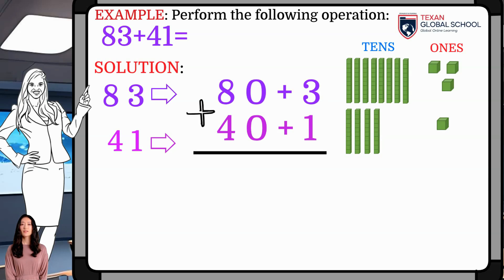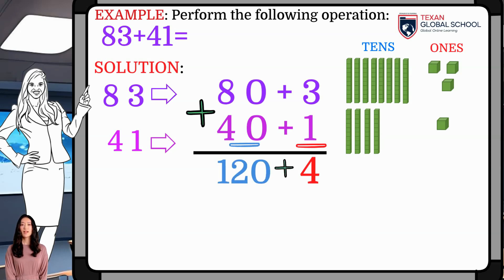Then, draw a line below to perform the addition. Now, add each column: 1s and 10s. 3 plus 1 is 4, and 80 plus 40 is 120.